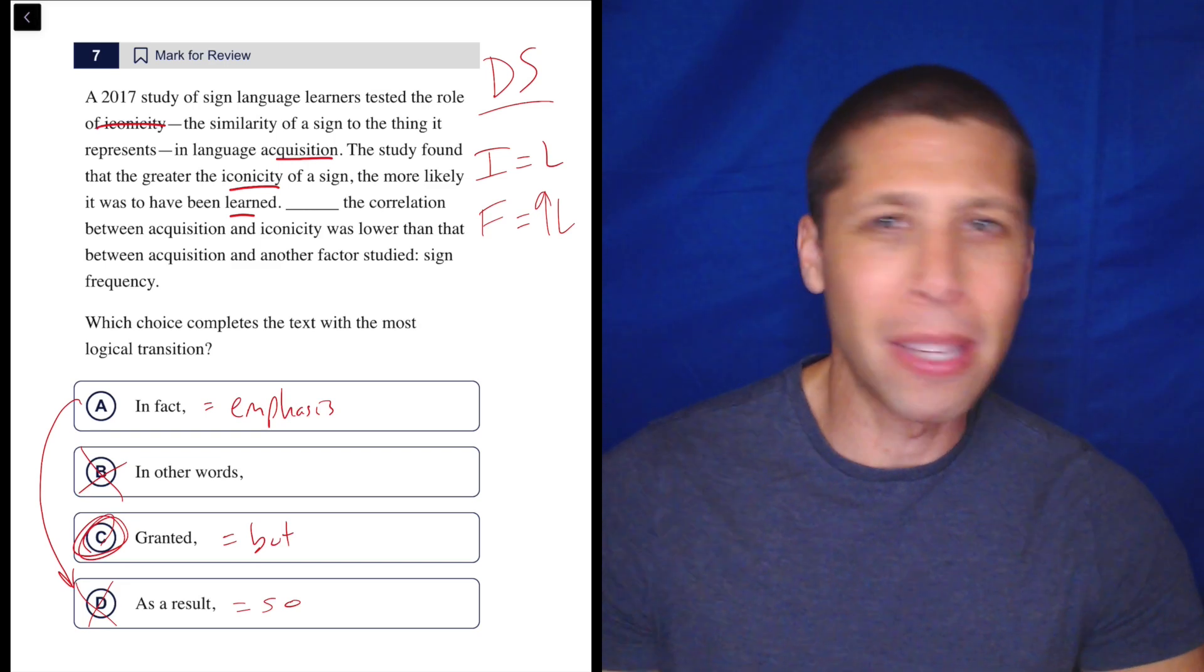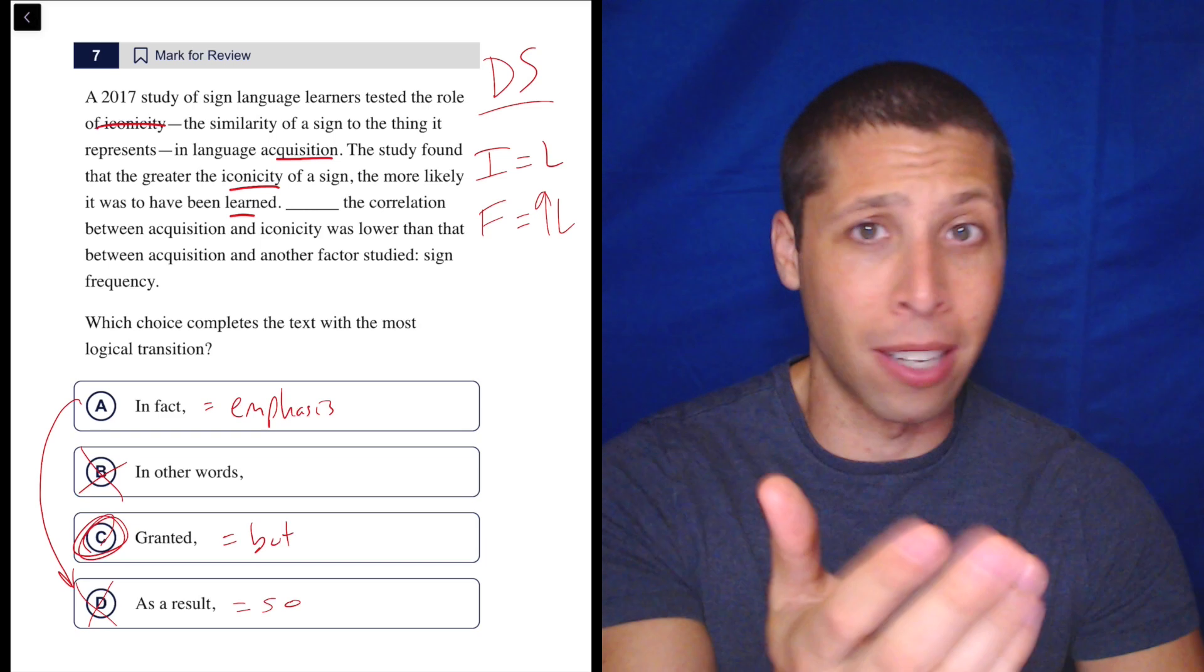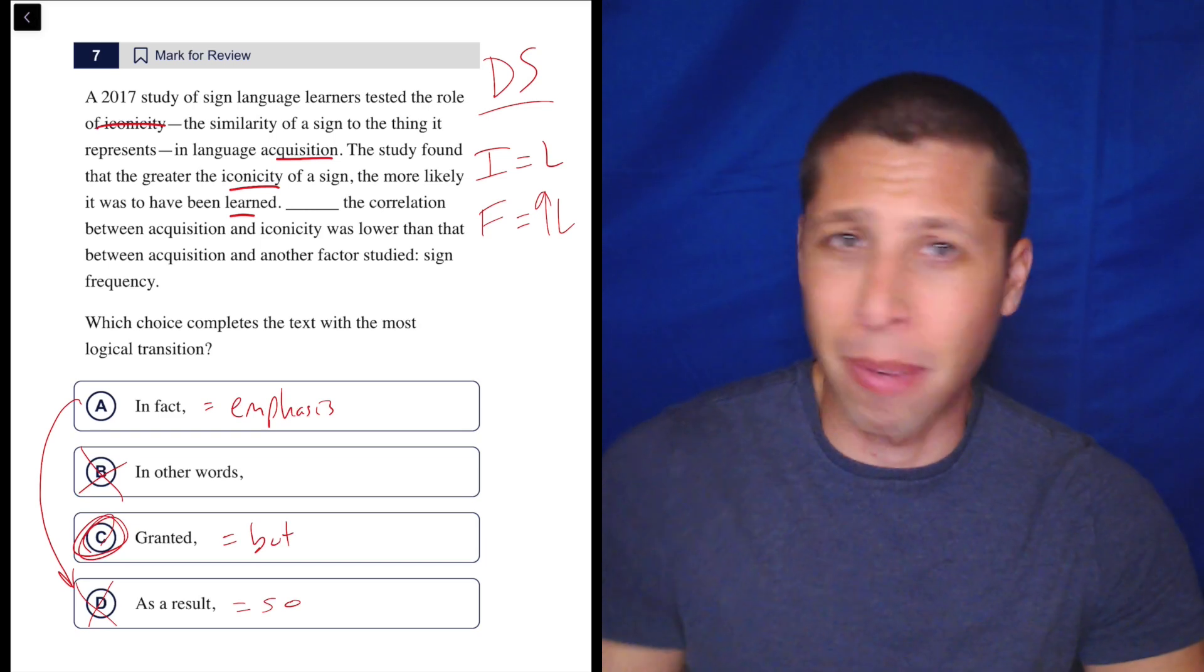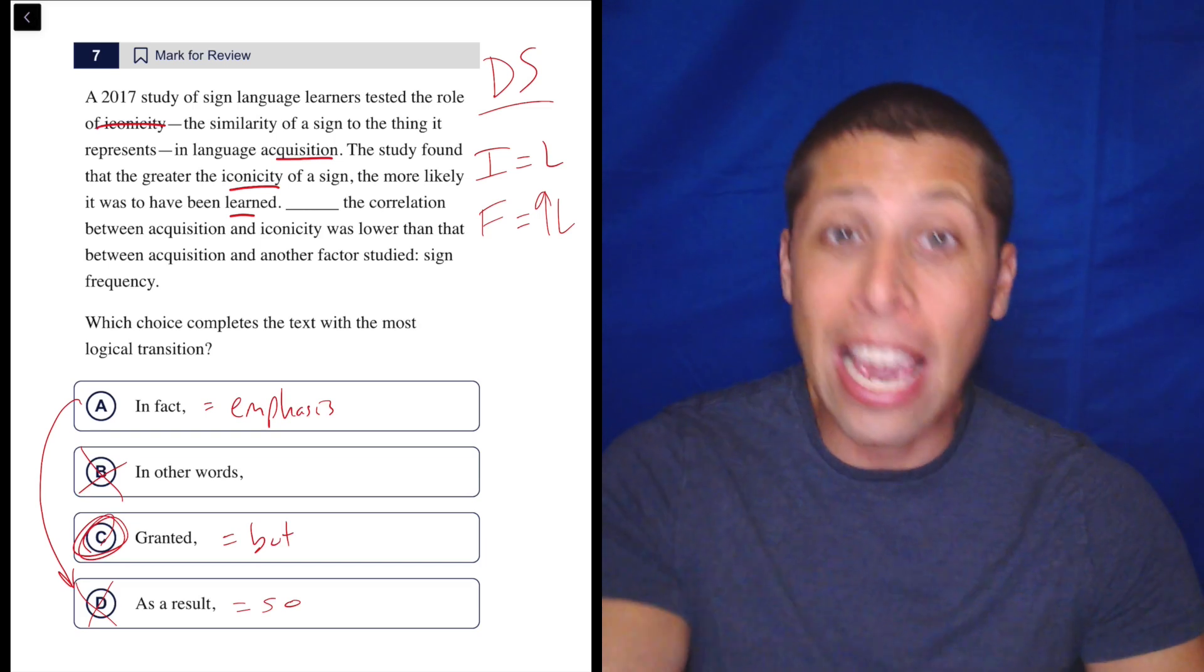And so if you get a definition, it's going to be the other context as in like the president granted the criminal a pardon. Like that's not the same definition here. It doesn't mean but in that sentence. He granted the pardon. It means gave. He gave the pardon.